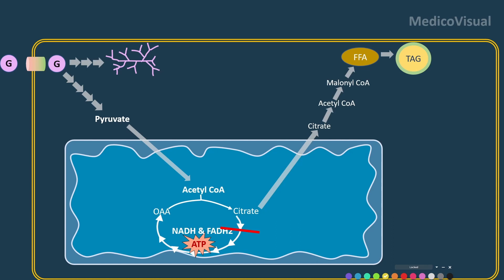These triglycerides will be packed as VLDL and released outside the cell if it was a hepatocyte — a liver cell. But if it was not a liver cell, say a muscle cell,